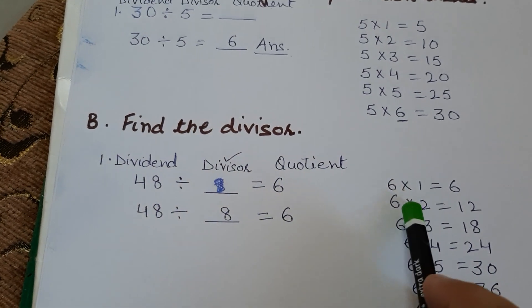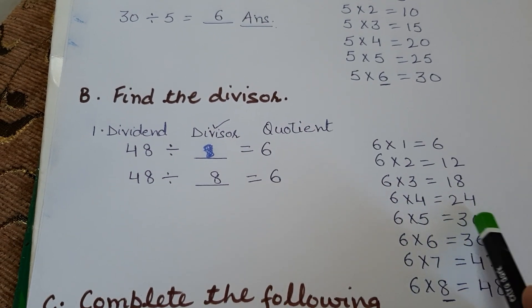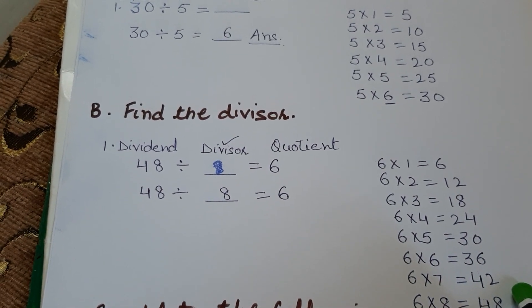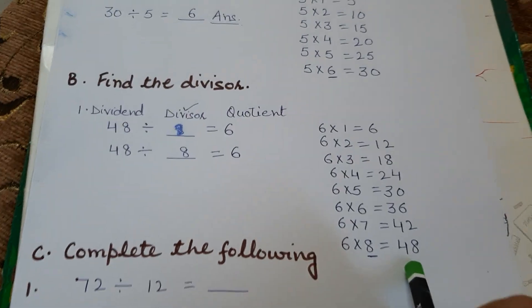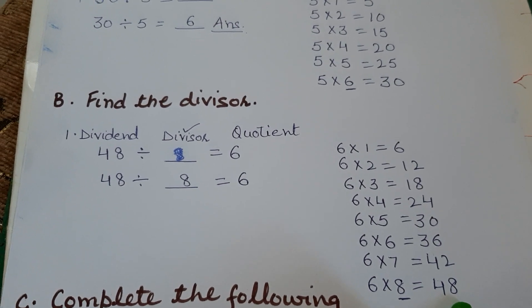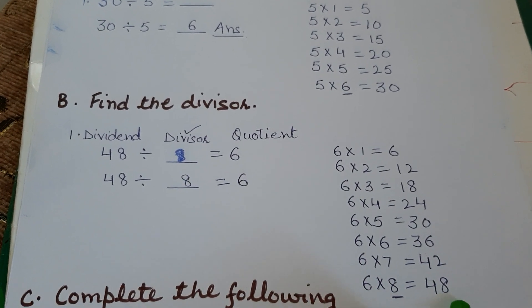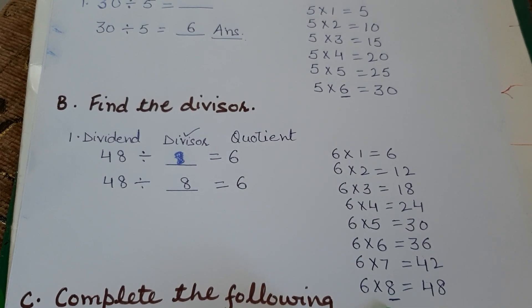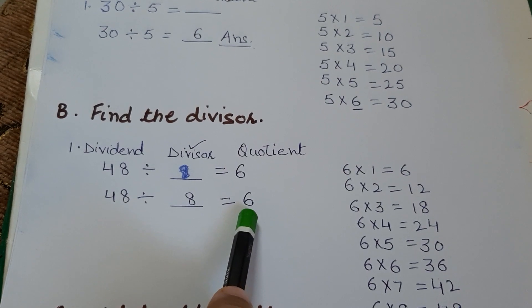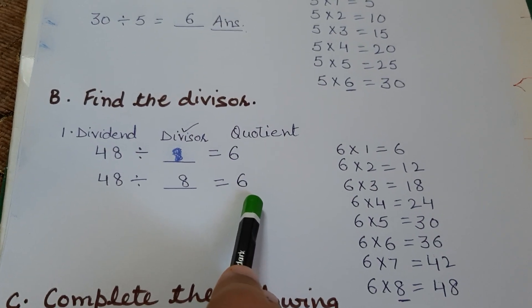6 ones are 6, 6 twos are 12, 6 threes are 18, 6 fours are 24, 6 fives are 30, 6 sixes are 36, 6 sevens are 42, 6 eights are 48. Our dividend is 48, so 6 eights are 48. This means the divisor is 8, because 6 is the quotient and 48 is the dividend — both are given. So 48 divided by 8 gives quotient 6.